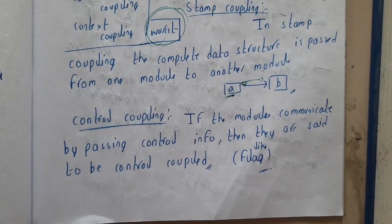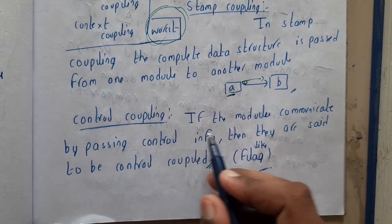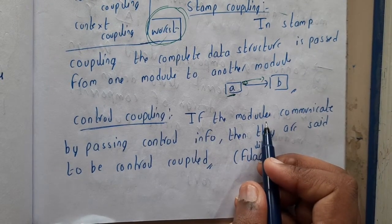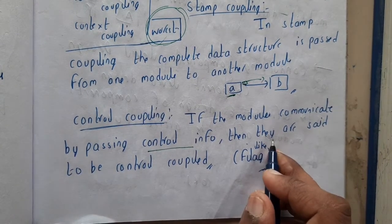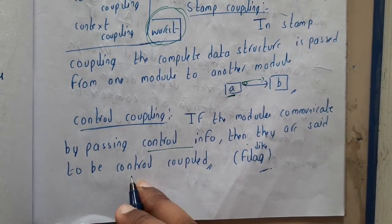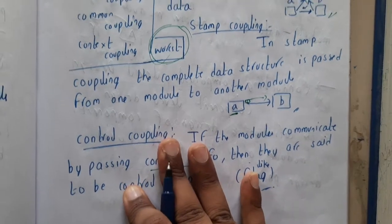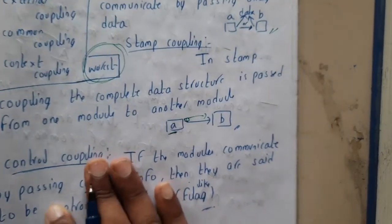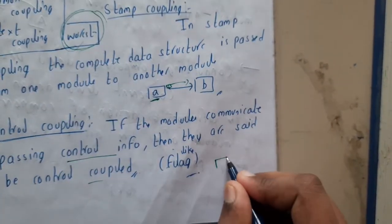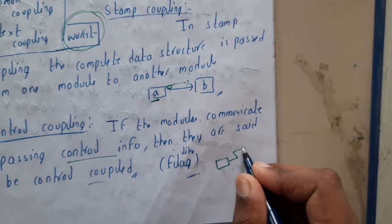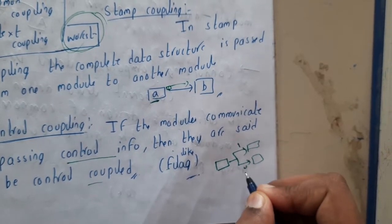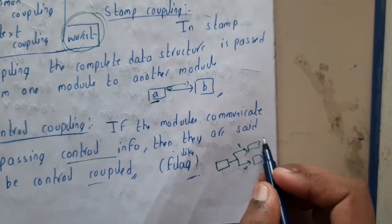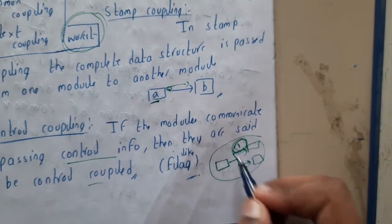Control coupling: If the modules communicate by passing control information, then they are said to be control coupled, like flags. If you recall some applications, assume in this way - based on input, these two are considered. If it is true it will be considering that, if it is false it will be considered this.